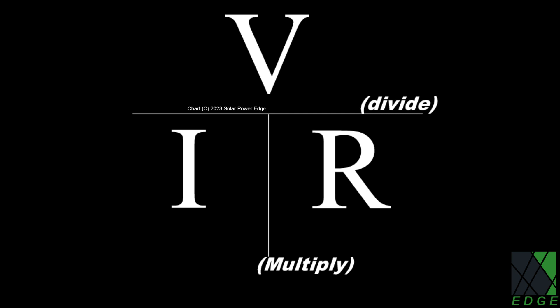To make the formula easier to use and easier to understand, you can arrange it as follows. V is on the top, which represents voltage, I is on the left, which represents current, and R is on the right, which represents resistance in ohms. All three are mathematically interrelated.